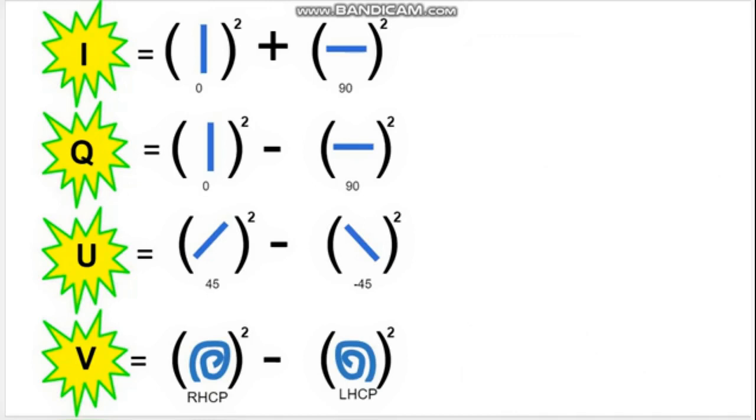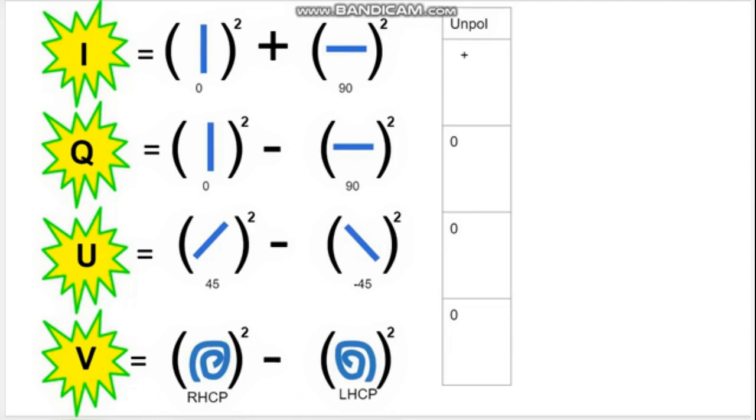To better describe this, let's take an example. If you have unpolarized light, i will be positive. But since it's unpolarized and randomly aligned in any direction, you'll have equal intensities in the zero of the 90, the 45, and the negative 45, and the right-handed and the left-handed. So all of those, q, u, and v will be zero. If you have something aligned along the zero polarization direction, again, i will be positive because you are receiving some incident radiation. q will be positive because there is a positive amount in zero, nothing in 90. u will be zero because there is an equal amount if you decompose zero into 45 and minus 45, similarly with v.